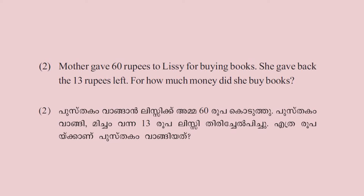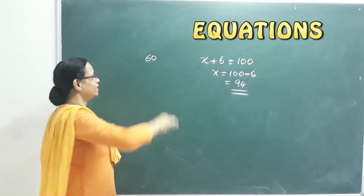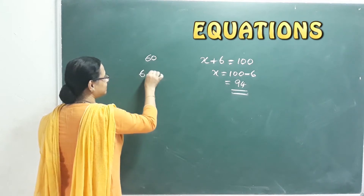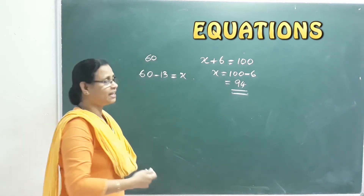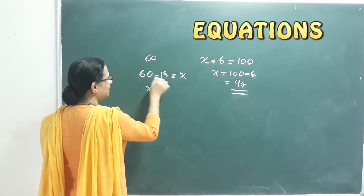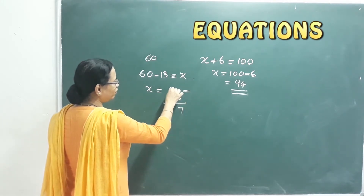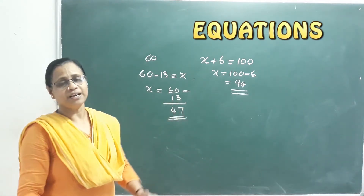Next question: Mother gave 60 rupees to Lizzie for buying books. She gave back 13 rupees left over. For how much money did she buy books? That means 60 minus 13 equals x. So x equals 47 rupees. Lizzie spent 47 rupees buying books.